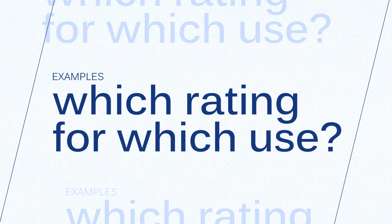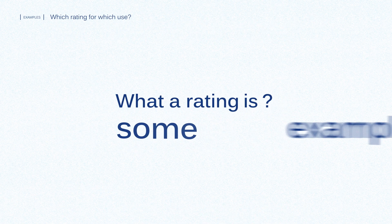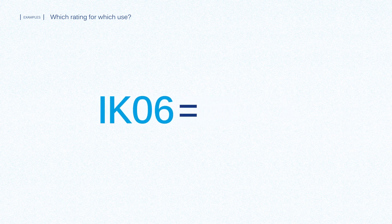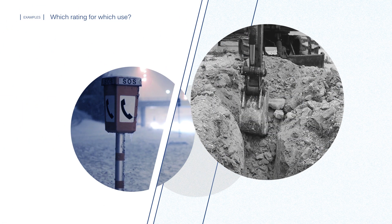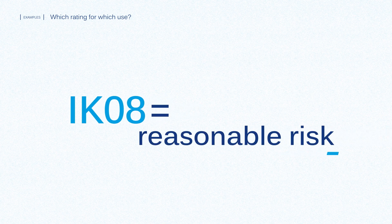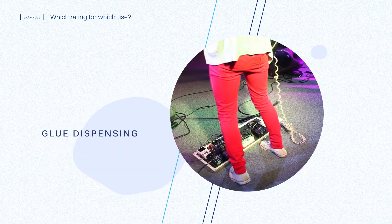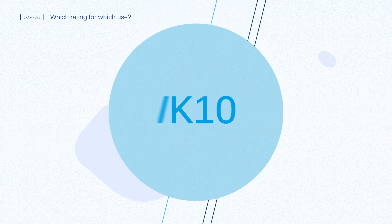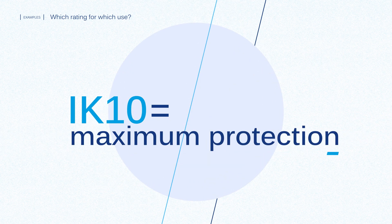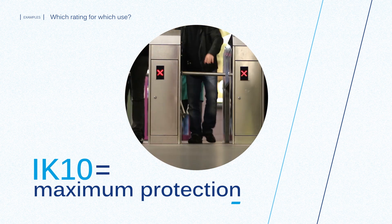To give you an idea of what a rating means, here are some examples. IK 08 is great for areas that provide a reasonable risk of impact — for example, the control panel of an emergency phone next to highways, equipment designed to be rented out, or foot switches like effect pedals for musicians or glue dispensing in production. IK 10 is essential for maximum protection in places such as parks, schools, prisons, and subways.